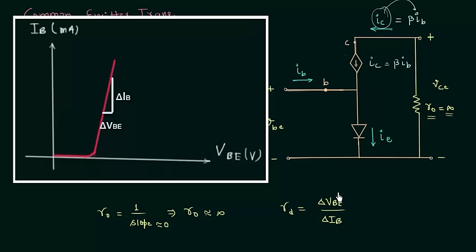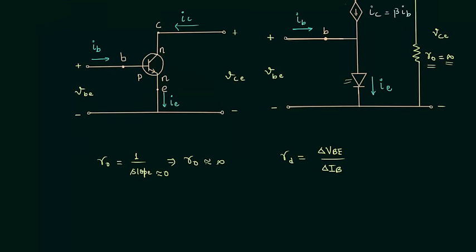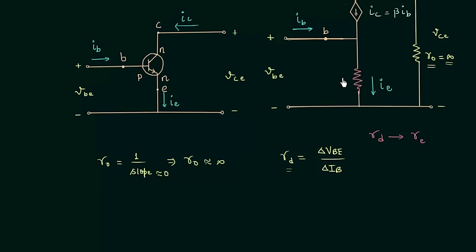The dynamic resistance is represented by R_d and equals δV_BE / δI_B, where V_BE is the input voltage and I_B is the input current. We can improve our model by replacing the diode with dynamic resistance R_D. The diode is in the emitter branch, so after replacing it, resistance R_D goes into the emitter branch and emitter current I_E flows through it.